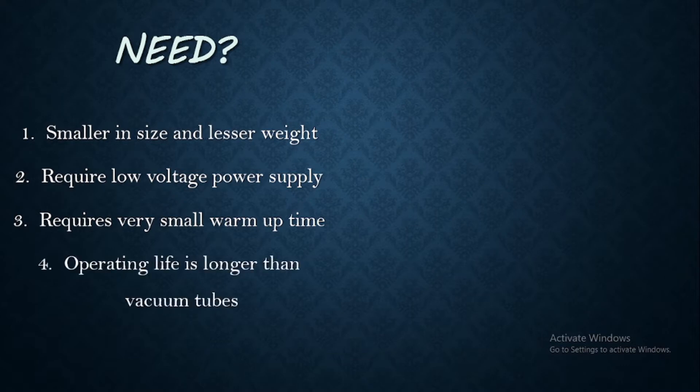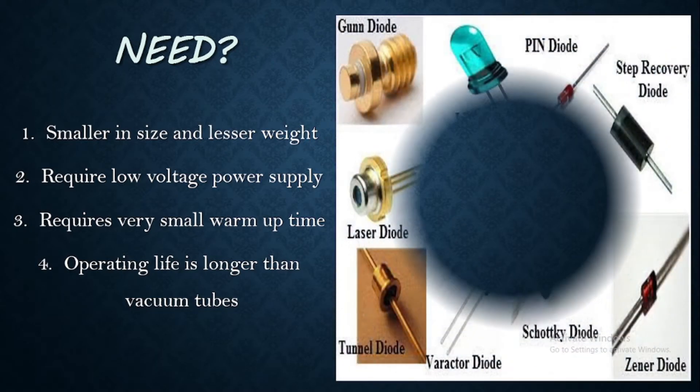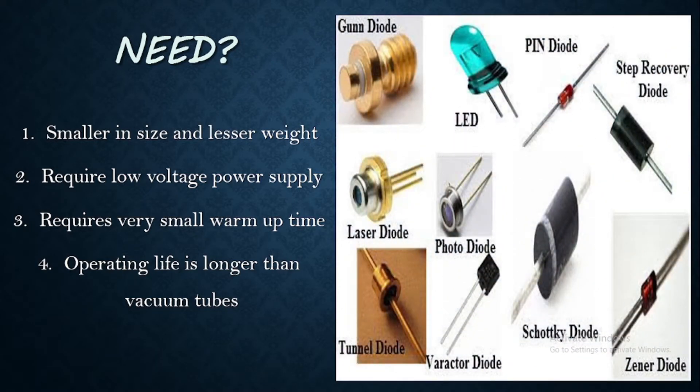Then fourth mainly is the operating life. So the operating life of a semiconductor is longer when compared to that of the vacuum tubes and all. So we can say, these four are the main reasons why we need a semiconductor.